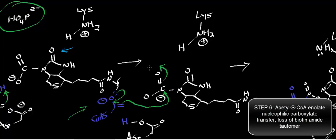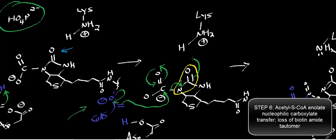That tetrahedral intermediate is short-lived and will quickly collapse back to the trigonal planar state. Keep in mind that biotin, with the carboxyl group attached, had an amide linkage. So instead of simply losing a leaving group, which would be biotin, we're actually going to tautomerize the amide. These electrons are going to come in and form the Schiff base, causing nucleophilic attack of the pi electrons on the lysine residue.